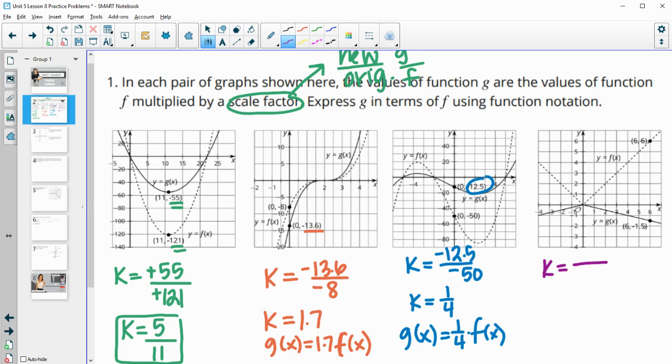And then the final one. The g value is negative 1.5 and the f function is 6. If we divide those we end up with negative 0.25 or negative 1/4. So g of x is equal to negative 1/4 times f of x.